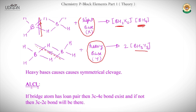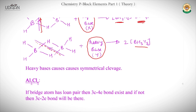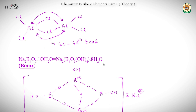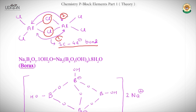In Al₂Cl₆, as already mentioned, the bridging atom is Cl, which does have a lone pair. Therefore the bond is a 3-center 4-electron bond. There are two such 3-center 4-electron bonds in Al₂Cl₆.